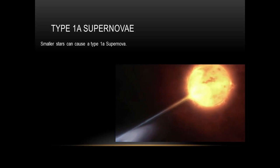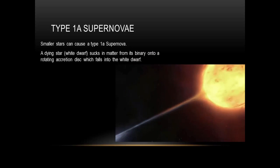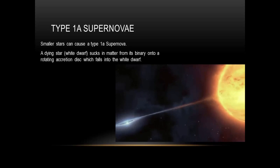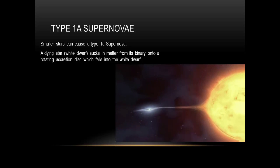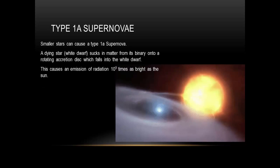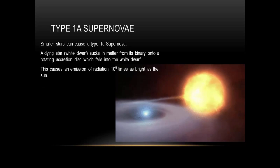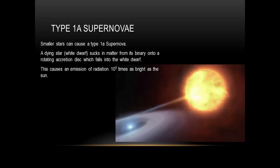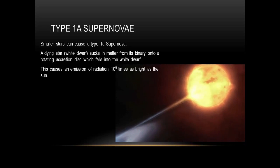These are caused by small stars, which are basically white dwarfs. The matter falls onto this accretion disk, it falls in, it will explode, and it will cause an emission of radiation which is 10 to the 9 times as bright as the sun.